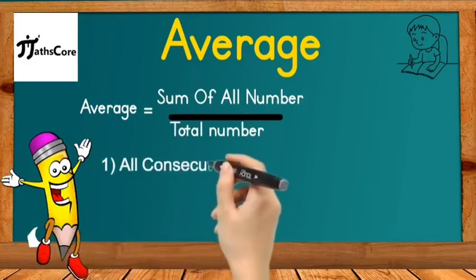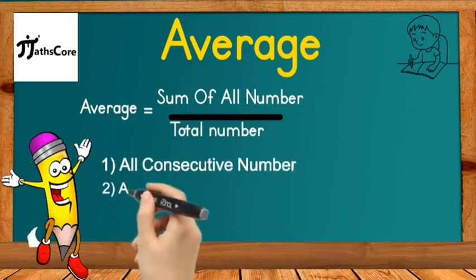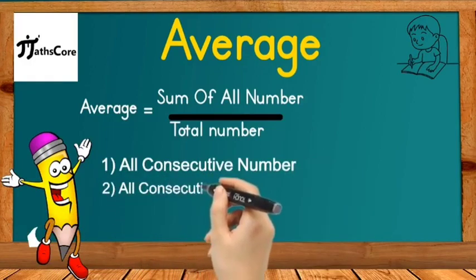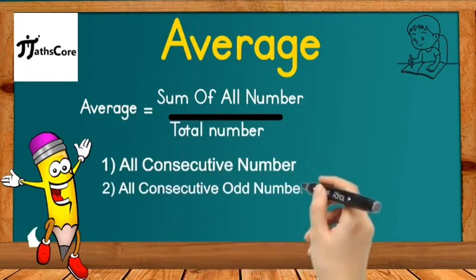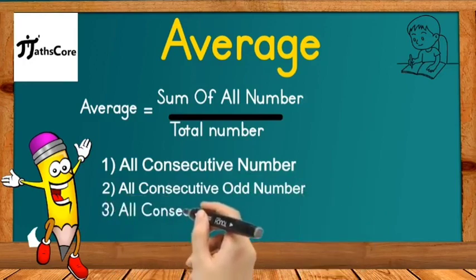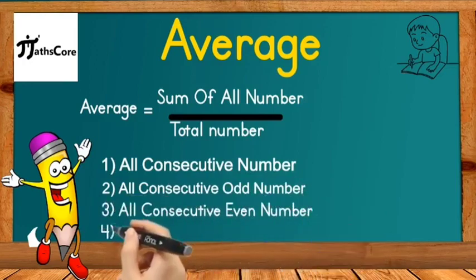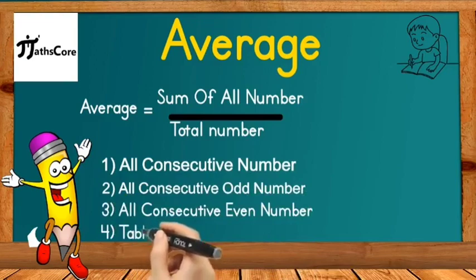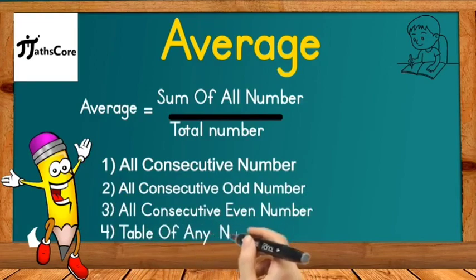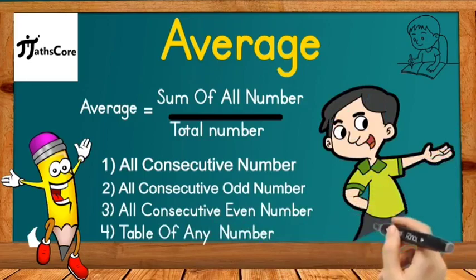The first type is average of all consecutive numbers, second is average of all consecutive odd numbers, third is average of all consecutive even numbers, and fourth is average of all consecutive multiples of a number. So let's start it.